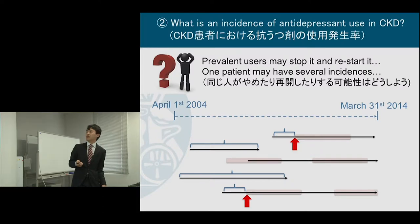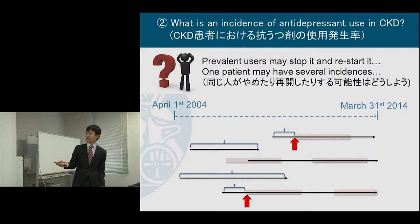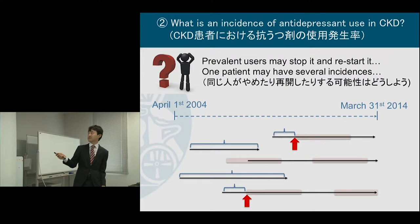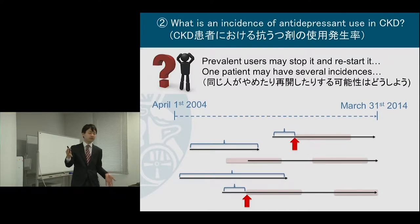I had a question about this. Prevalent users may stop and restart antidepressants — even prevalent users at the beginning of the CKD cohort entry may stop and then restart, so this could be counted as incidence. Also, even incident users — one patient may have several incidences, like infection. One patient could have several infections during the follow-up period.